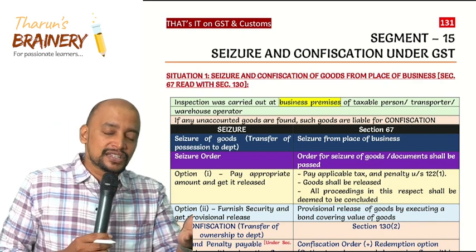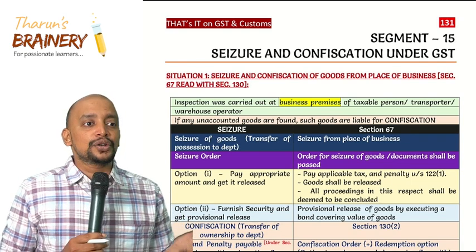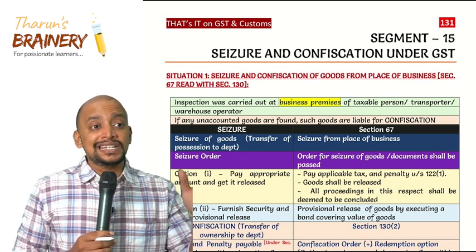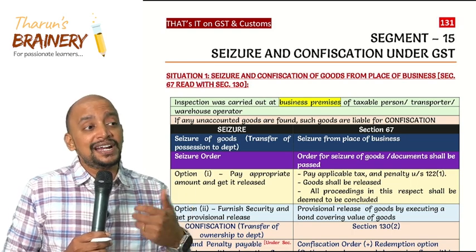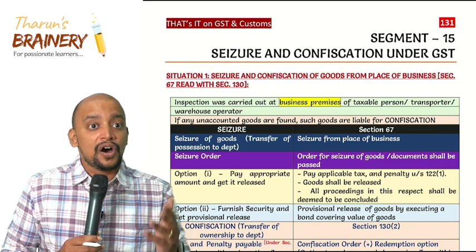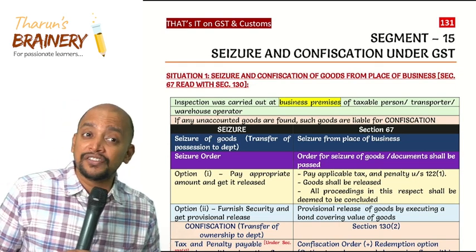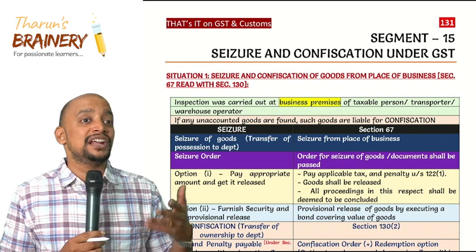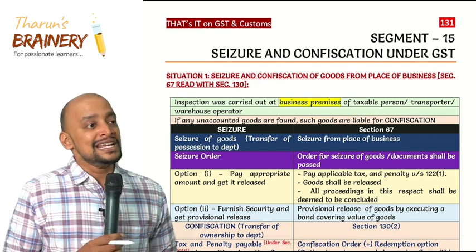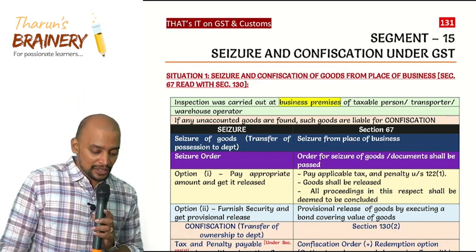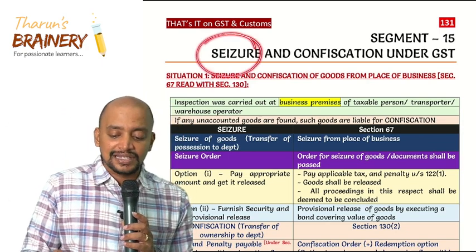These two arise because of search. What is search? Identifying the premises where the goods are stored, or identifying the goods which are in transit — which are being evaded or have really been evaded. Maybe the goods are transported without an e-way bill, or transported without valid documents, or in the stock records those goods are not available in the premises. In that case, those goods are illegal goods — they are trying to evade GST. With respect to those goods, they will seize or confiscate.